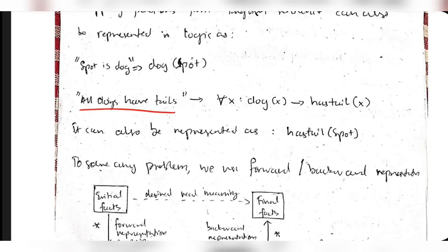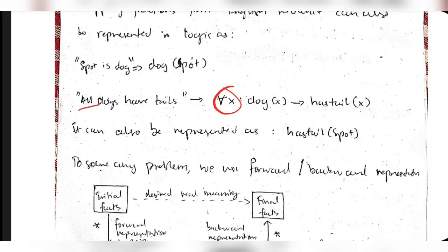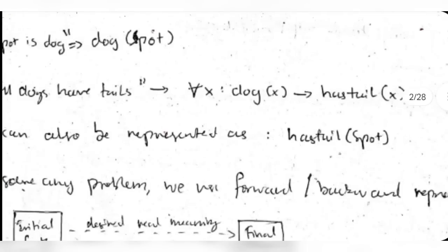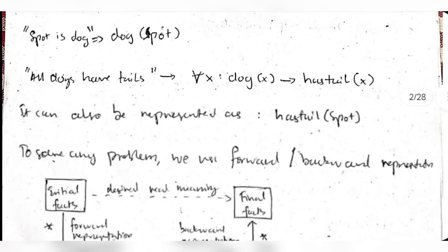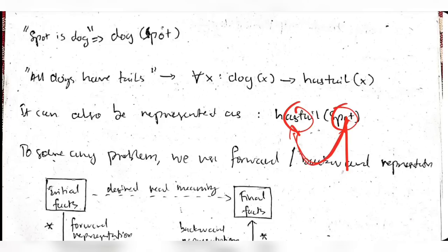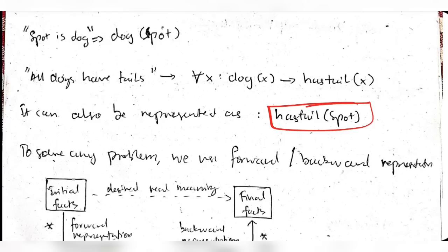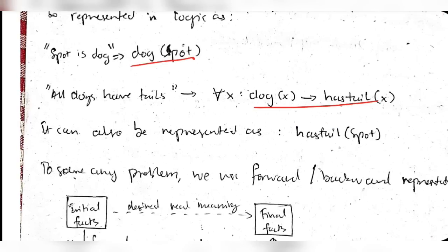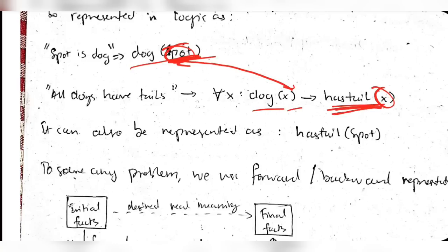For 'All dogs have tails,' since 'all' appears you use the universal quantifier symbol, then write dog(x) → has_tail(x). This can also be represented as has_tail(spot). This result comes from two sentences: dog(spot) and dog(x) → has_tail(x). Substituting x with 'spot' in the second gives has_tail(spot).